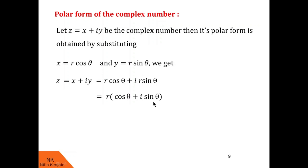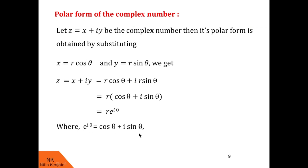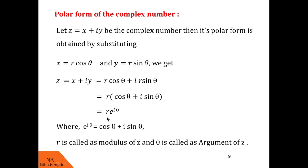According to Euler's form, cos theta plus i sin theta can be written as e raised to i theta, where e raised to i theta is cos theta plus i sin theta. Note that this r we call as modulus of z and theta we call as argument of z.